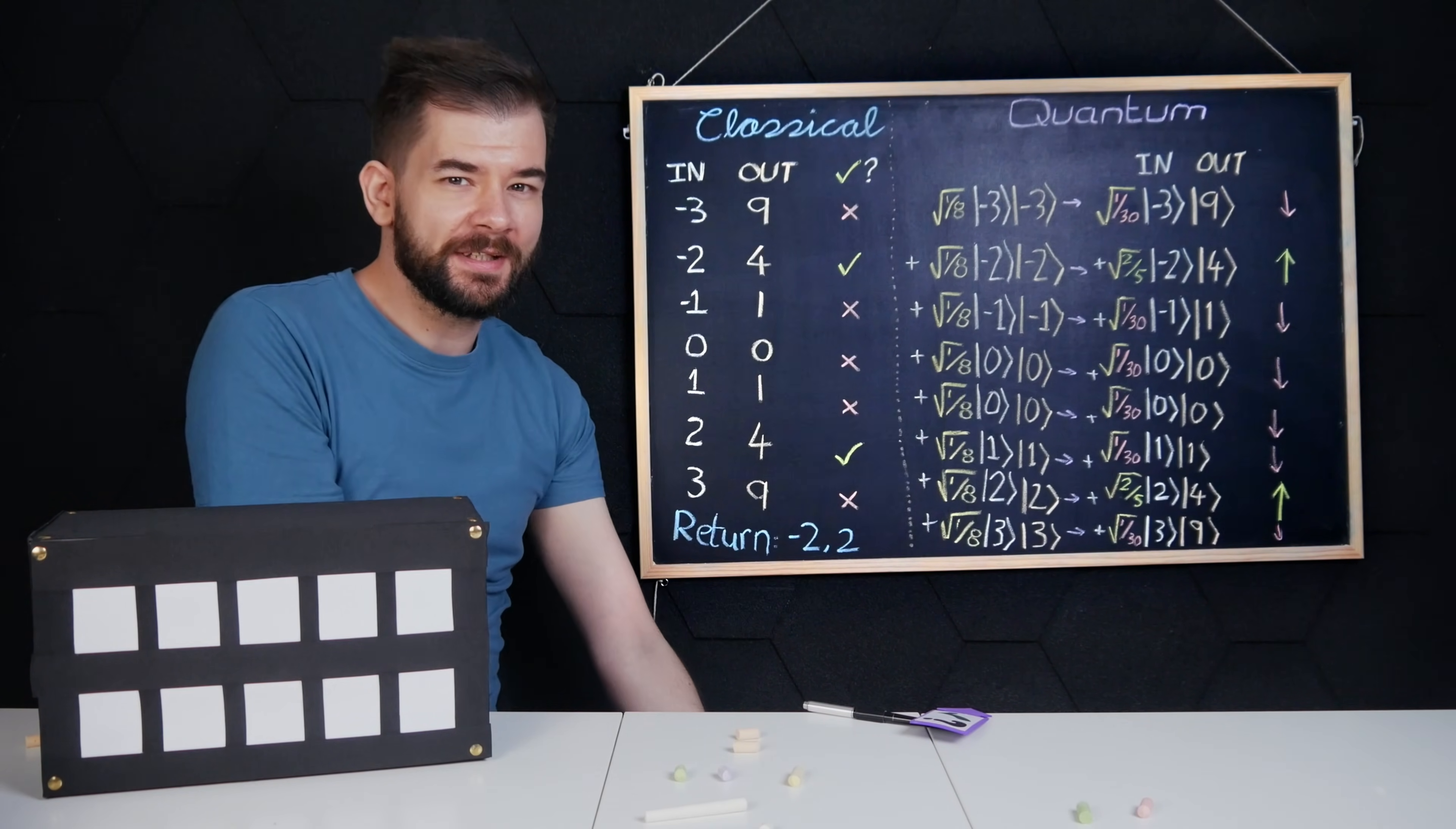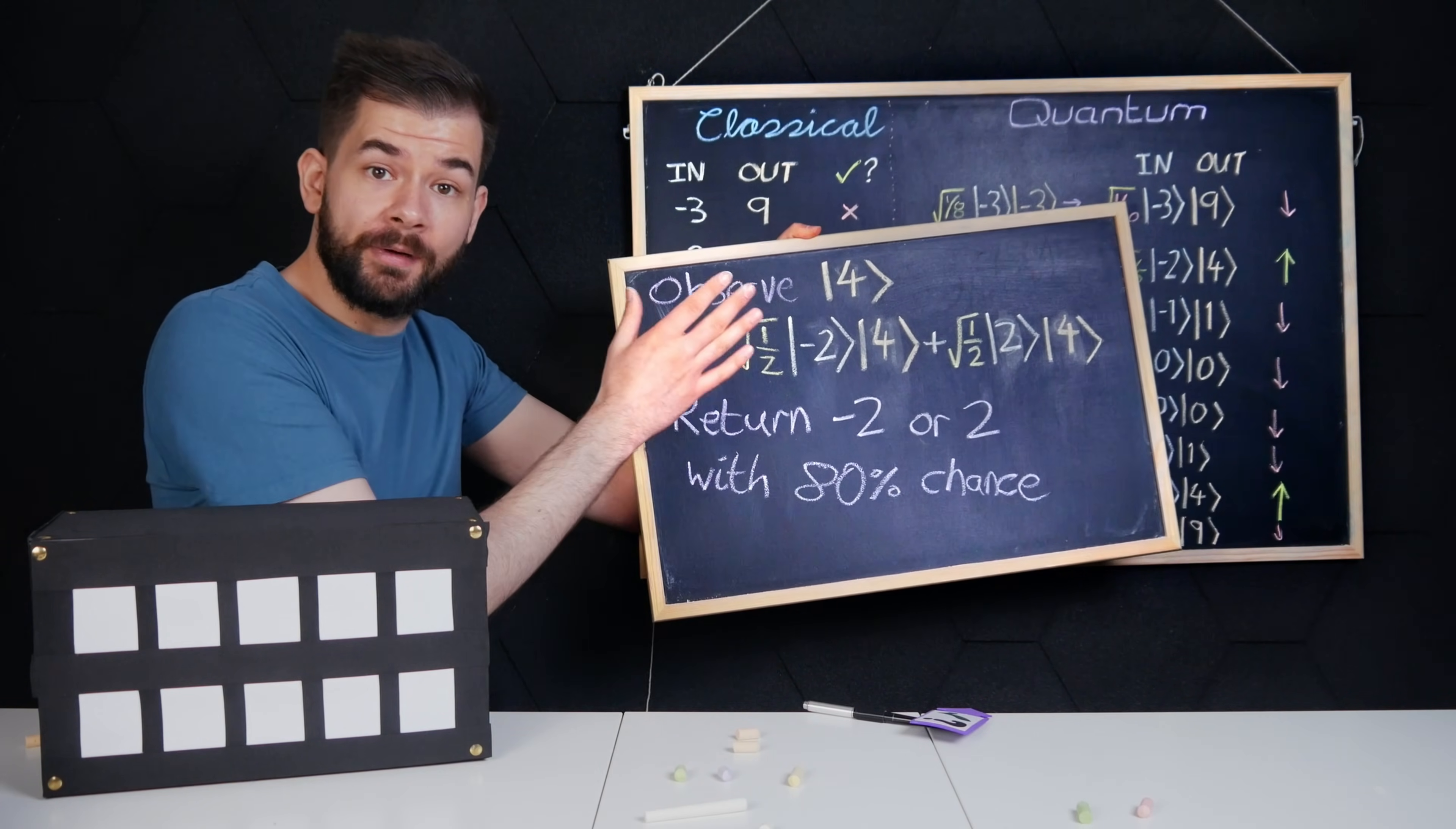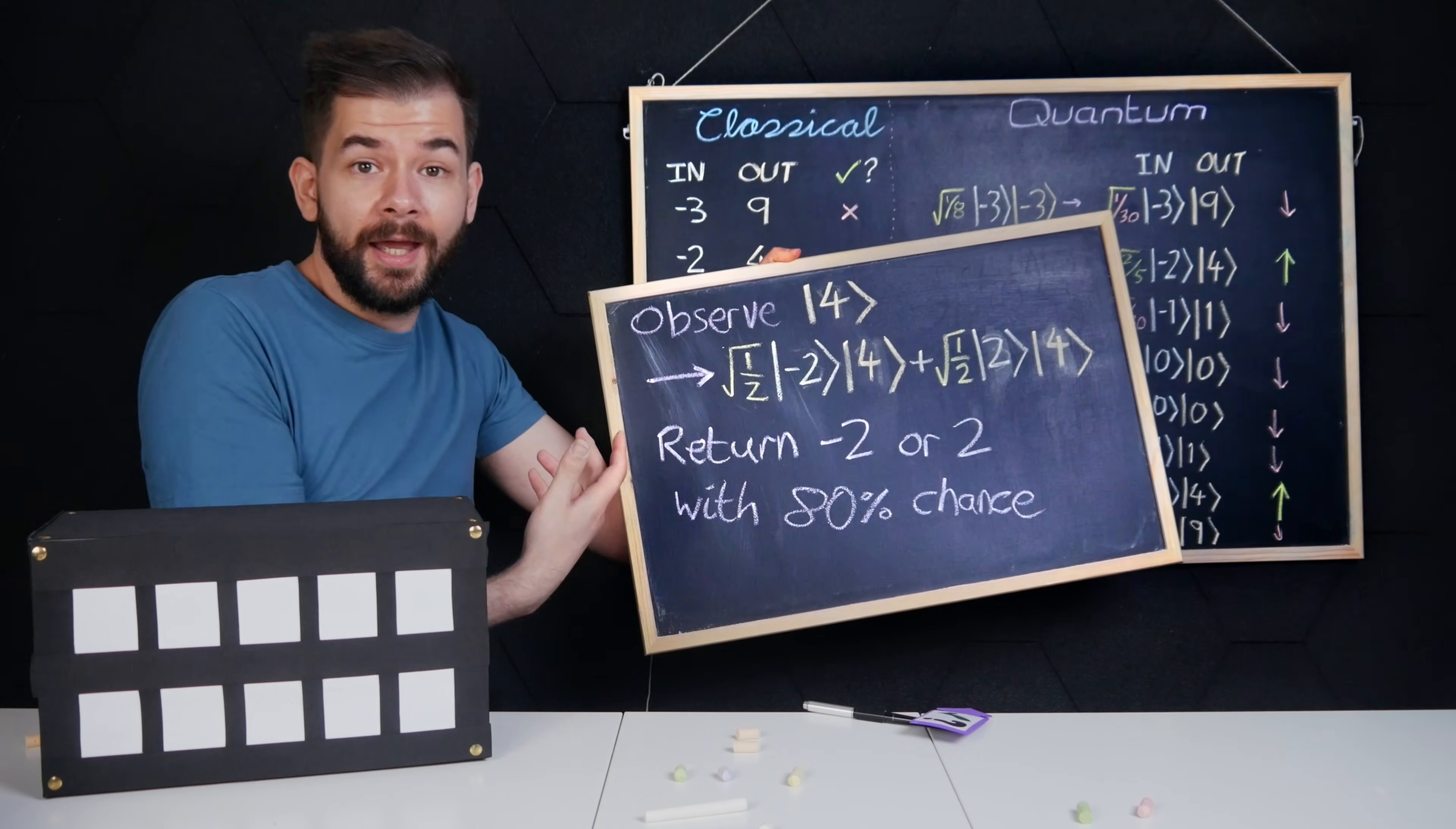Unfortunately, I wasn't guaranteed to get a correct answer. It was only an 80% chance of observing a correct input. But if I repeated this, say four times, it's very unlikely that my process will yield a false positive.